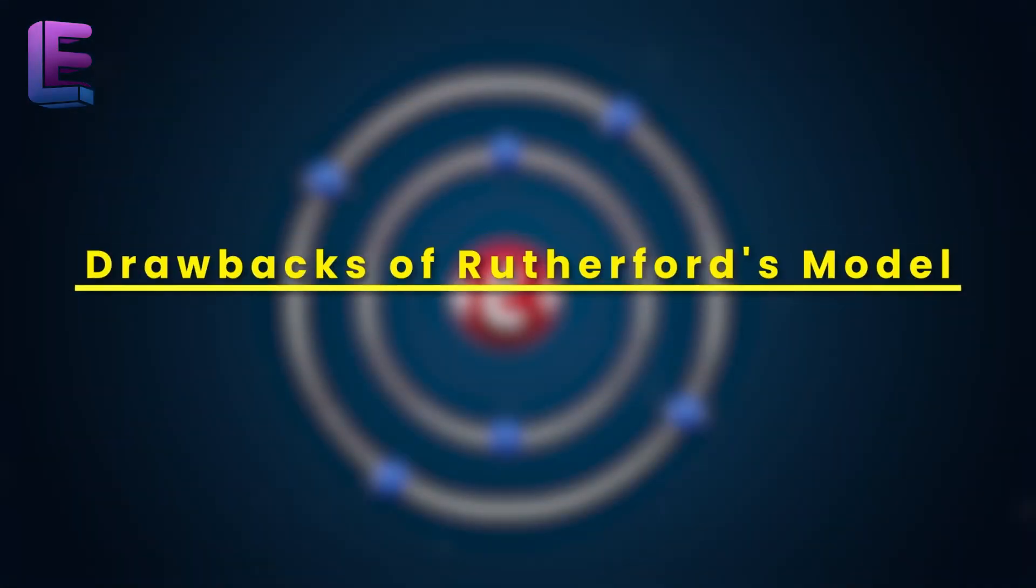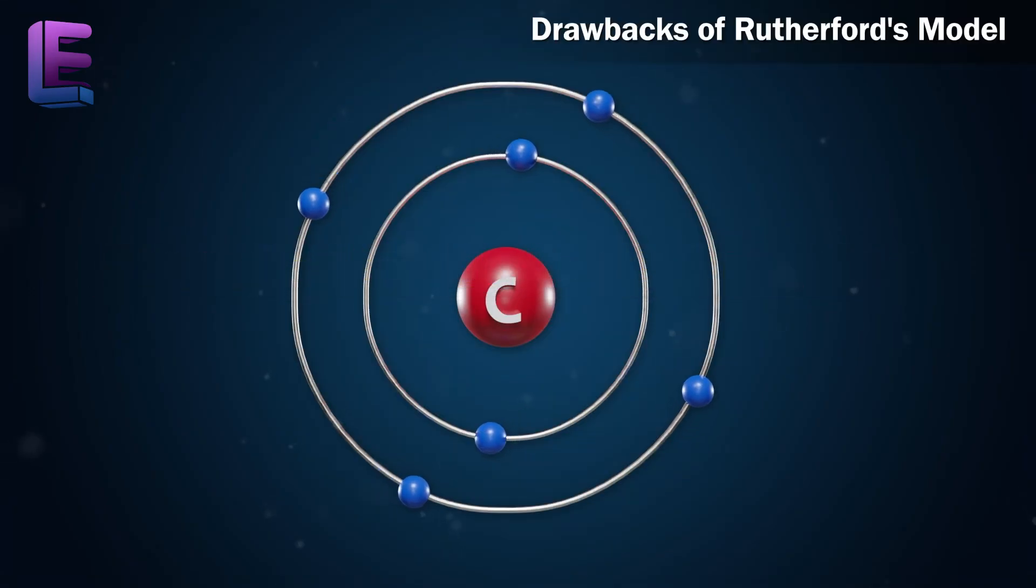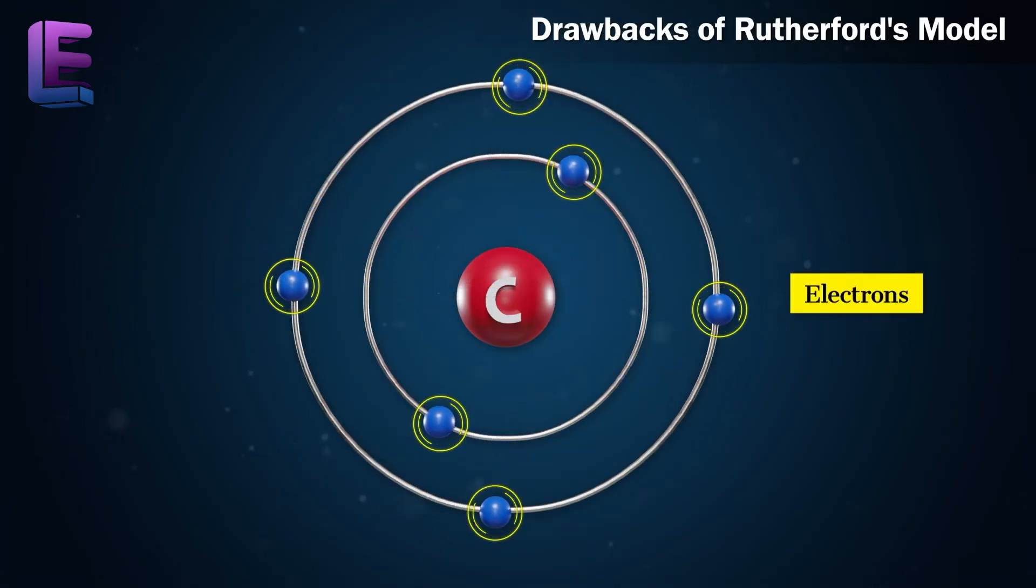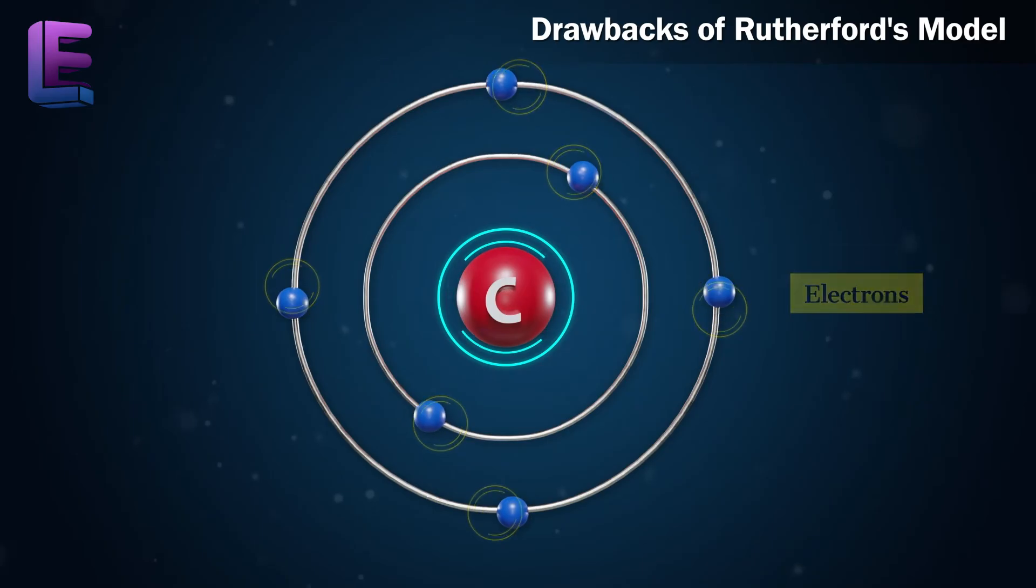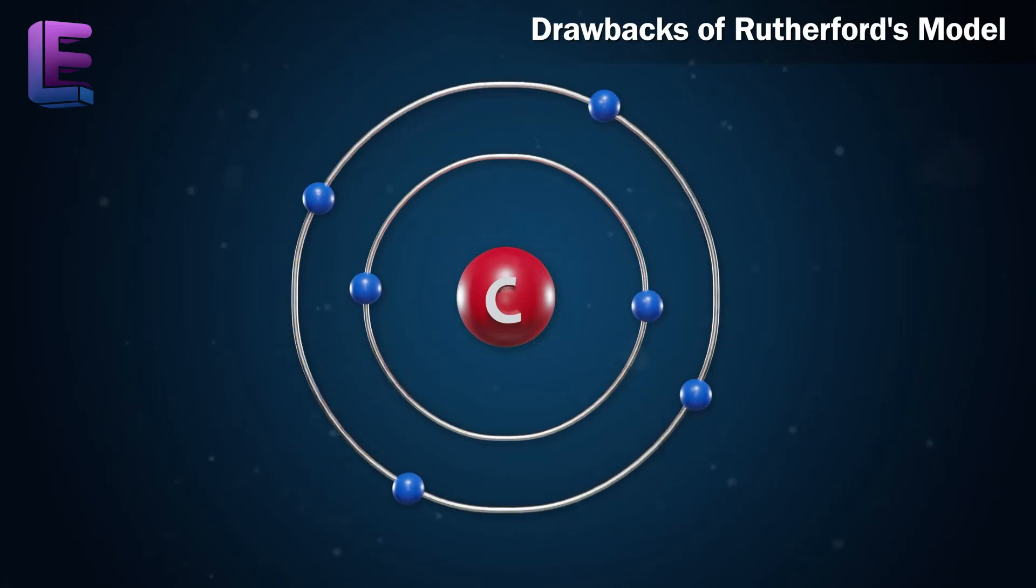Drawbacks of Rutherford's model. Rutherford's model states that electrons revolve around the nucleus. However, based on electromagnetic principles, revolving electrons must emit large amounts of energy. If this happens, they would lose energy and their orbits would reduce.